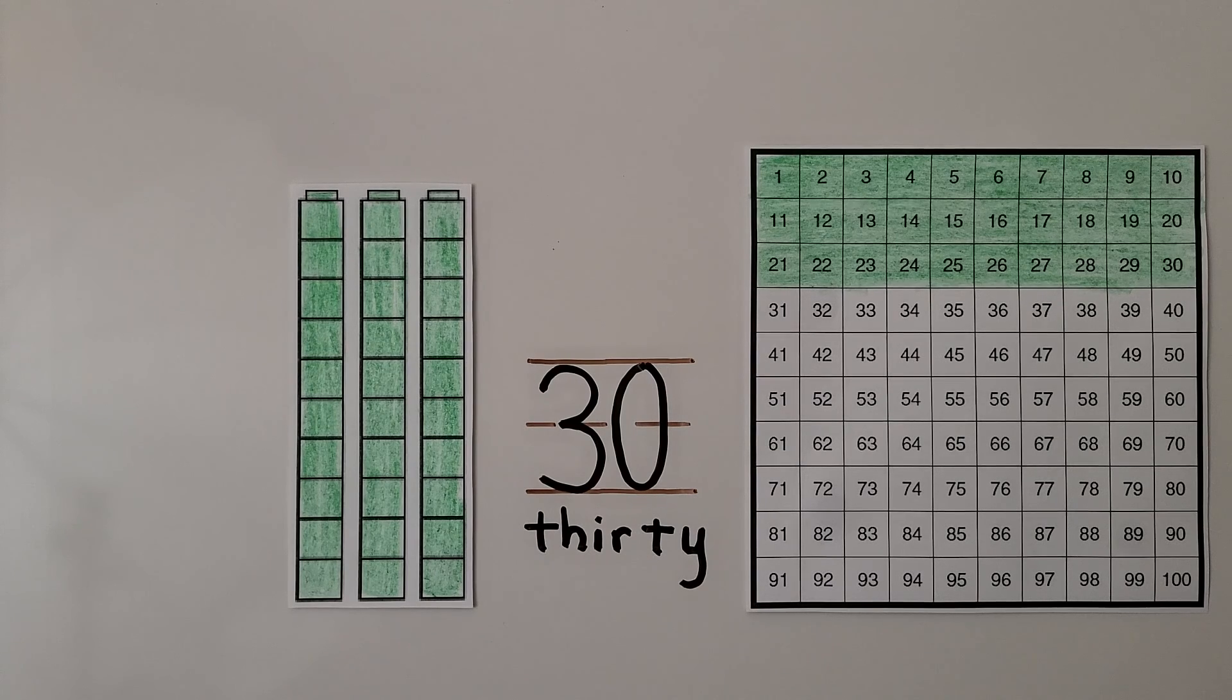But we don't need a 100 chart to skip count by tens. We can put objects in sets of 10 and count them by tens: 10, 20, 30.